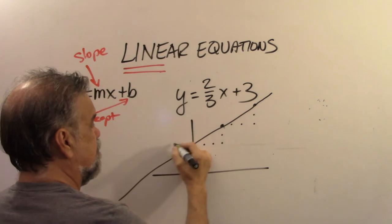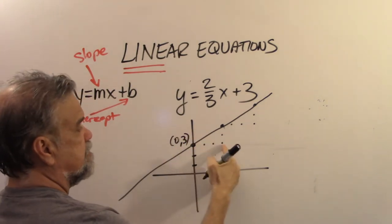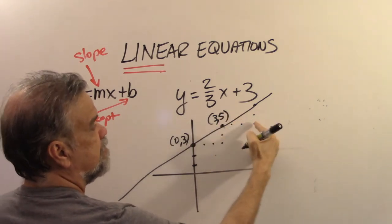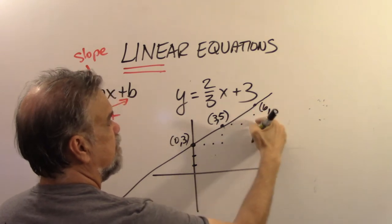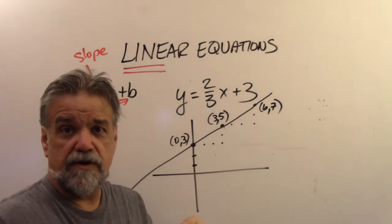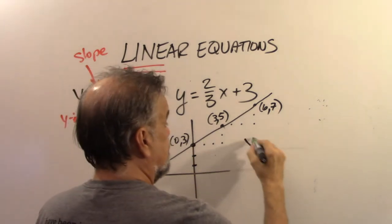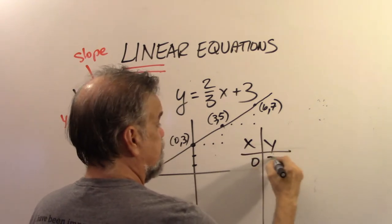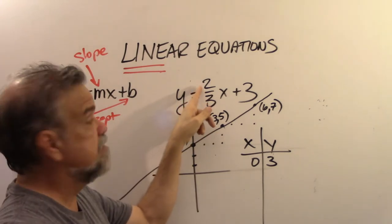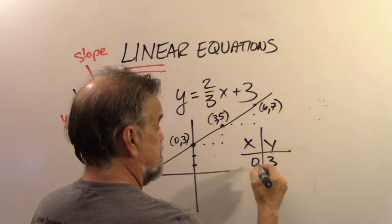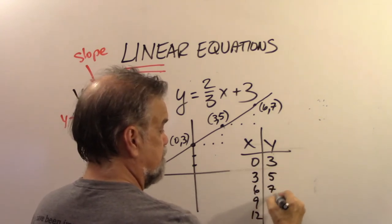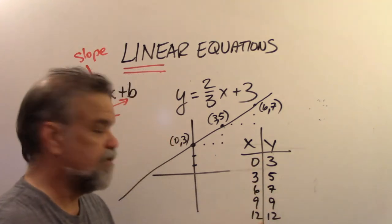This goes through (0, 3). x increased by 3, so the next point is (3, 5), then (6, 7). Sometimes it's easier to use a table: list x values 0, 3, 6, 9, 12 and count up by 2s for y: 3, 5, 7, 9, 12. All of those points lie on that line.